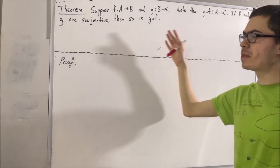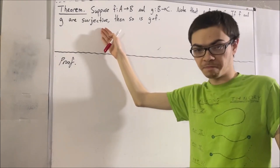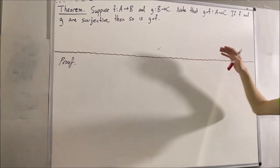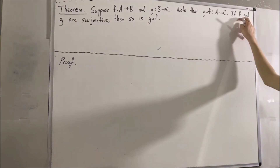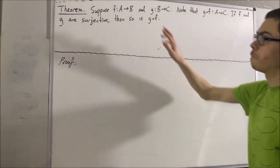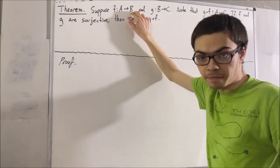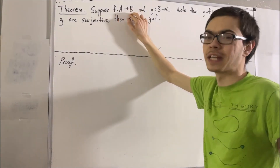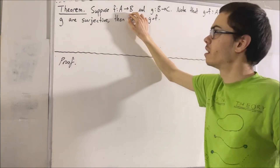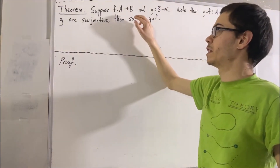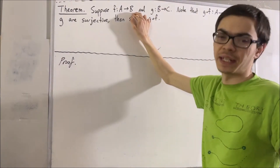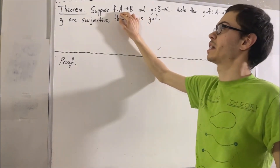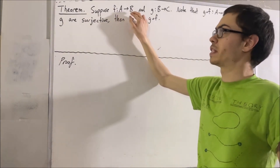So to start, what does it mean for a function to be surjective? If we consider, for example, our function f, what it means is for every element in this set, there is an element in this set that maps onto the element in that set. More specifically, it means for every element b in B, there is an element a in A such that b equals f of a.